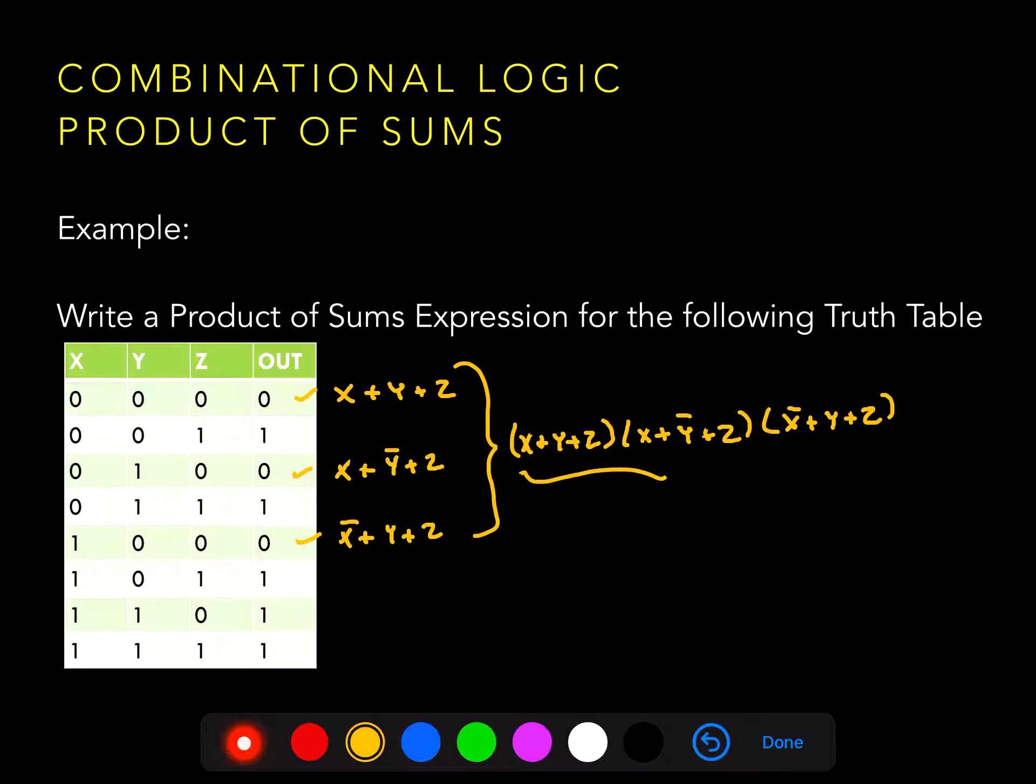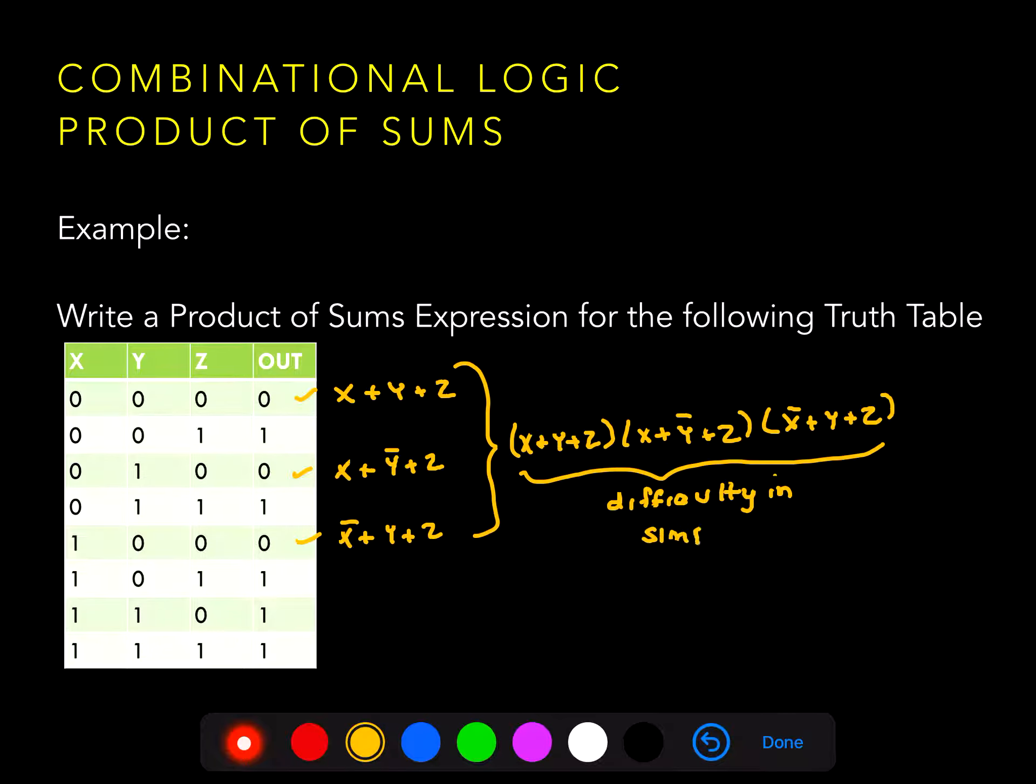Now, if we multiplied this all out, this would give us a little bit of a mess to simplify. And that's why the product of sums is not preferred over the sum of products, because oftentimes there's a lot more work involved in simplifying the expression. But in truth tables that don't have a lot of zeros at the output, a product of sums expression may be worthwhile.